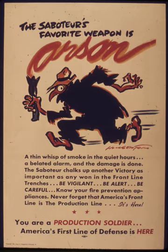Historically, the common law crime of arson had four elements: the malicious burning of the dwelling of another. Malicious, for purposes of common law arson, refers to action creating a great risk of a burning. It is not required that the defendant acted intentionally or willfully for the purpose of burning a dwelling. At common law, charring to any part of a dwelling was sufficient to satisfy the burning element. No significant amount of damage to the dwelling was required. Any injury or damage to the structure caused by exposure to heat or flame is sufficient.